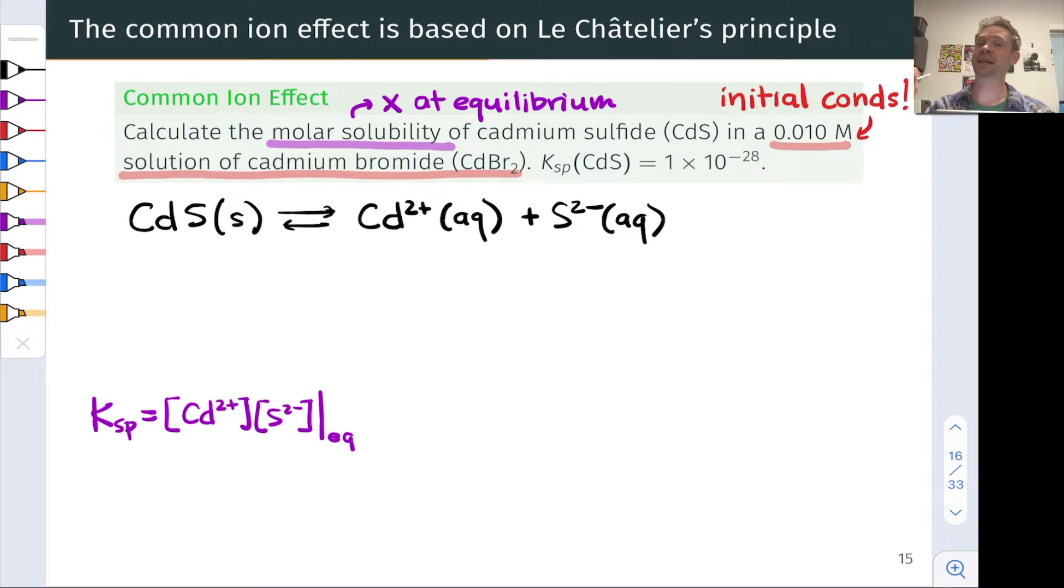Remember from the last problem, the excess solid does not matter, so we can use as much solid as we want. The cadmium sulfide solid doesn't appear in the reaction quotient, which I've also gone ahead and written out here in the form of Ksp equals the reaction quotient at equilibrium.